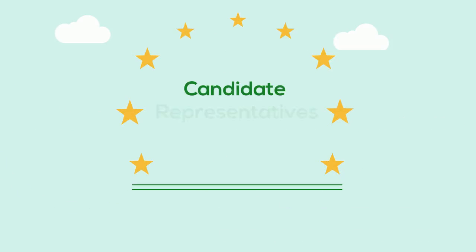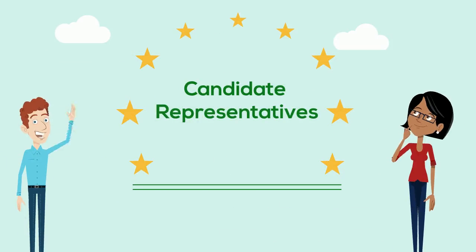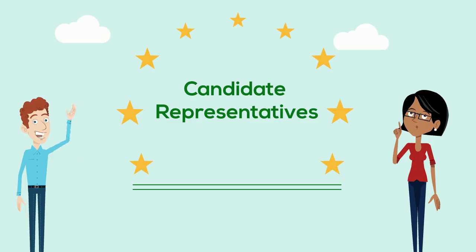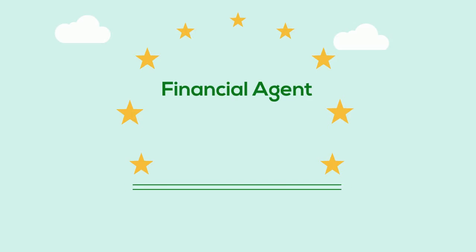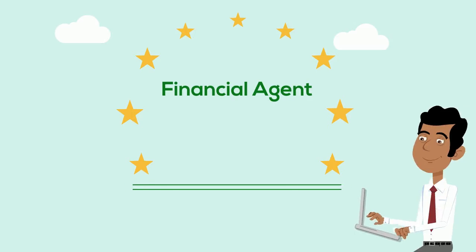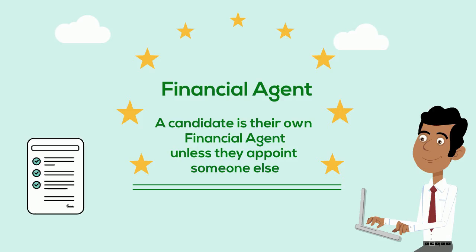Now that you've learned about the two main participants, let's talk about the other participants in a general local election. A candidate who commits to run for office will have to appoint one or more candidate representatives. Most importantly, candidates must have a financial agent. A candidate is their own financial agent unless they appoint another individual to the position. The appointment must be signed and submitted to the chief election officer before the nomination period ends.